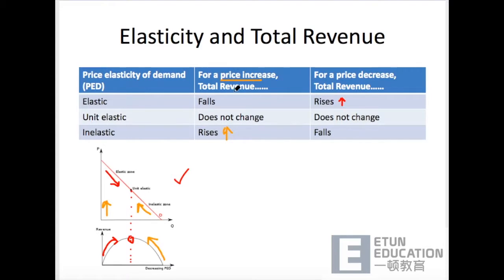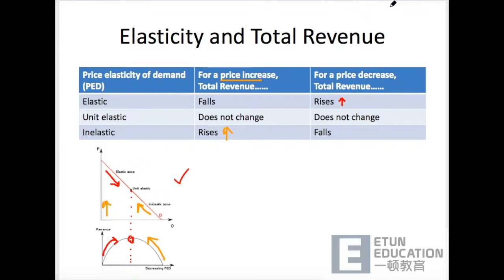So price increase, total revenue increase in the inelastic region. Don't just memorize the table, because this table is very easy to get from the graph. If you draw these two images, then you can do analysis for different stages, and you can easily get this information. And it can help us understand the relationship between elasticity and total revenue.